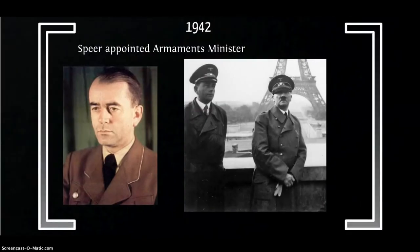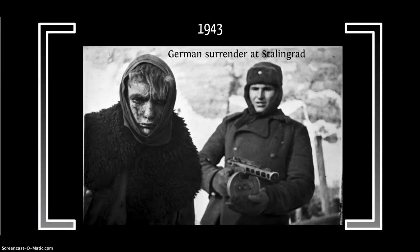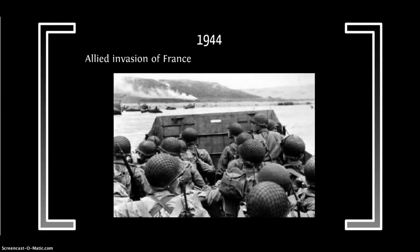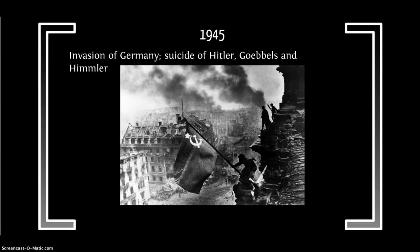In 1942, Albert Speer was appointed armaments minister, and he was quite effective in that role. In 1943, the first major loss of the German army — its myth of invincibility was shattered as the German Sixth Army was forced to surrender at Stalingrad. In 1944, the Allies invaded France at D-Day, and in 1945, the invasion of Germany proper and the suicide of Hitler, Goebbels and Himmler.